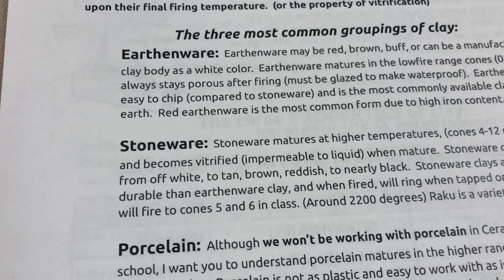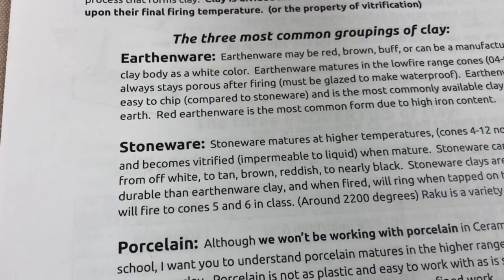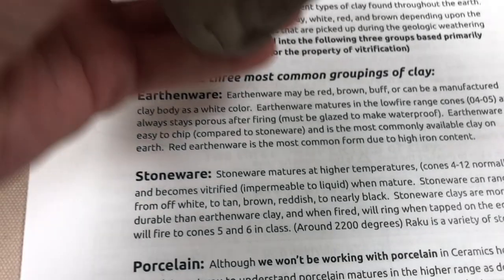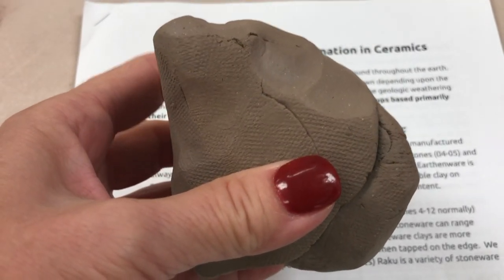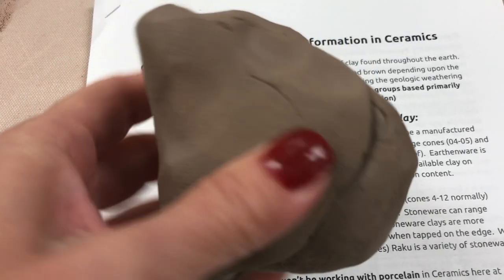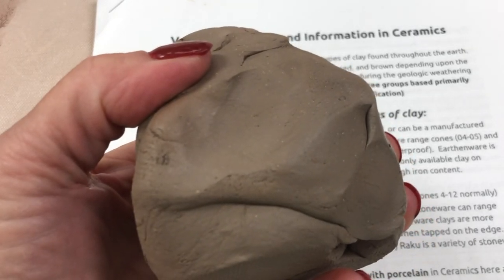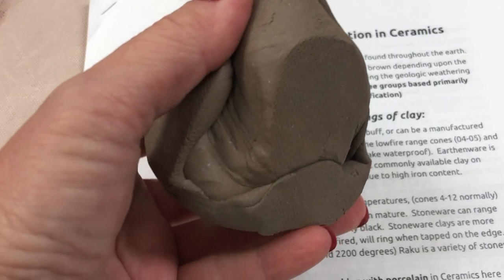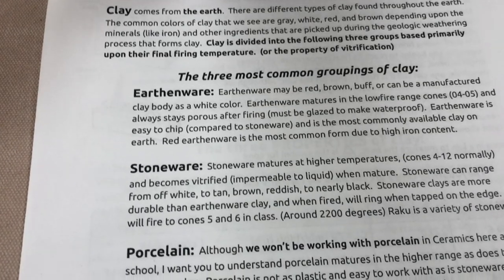The second grouping is stoneware. Stoneware matures at a higher temperature — it can become vitrified, as opposed to earthenware which doesn't fully become vitrified. Stoneware can become vitrified in the mid to high fire range. We have a mid-fire stoneware at school, a brown stoneware that does have grog in it. You cannot sponge this one when cleaning it or you will have a groggy surface. It fires to a nice tan.